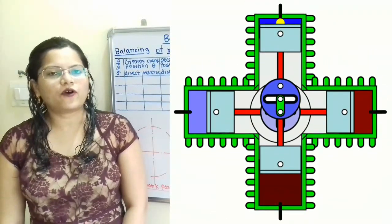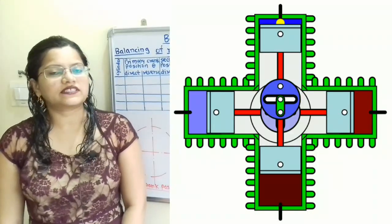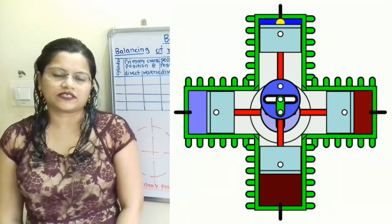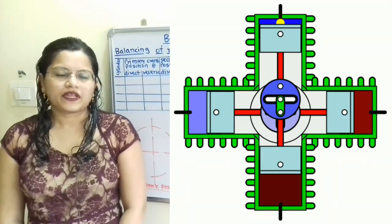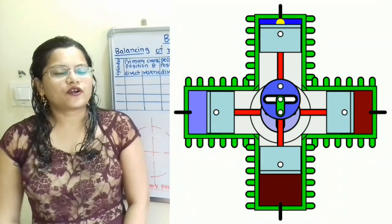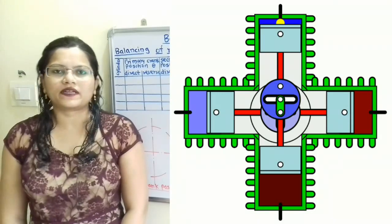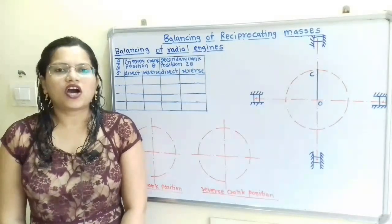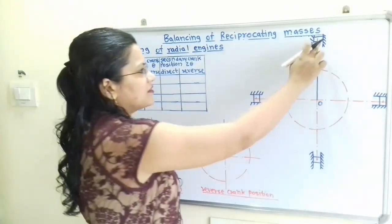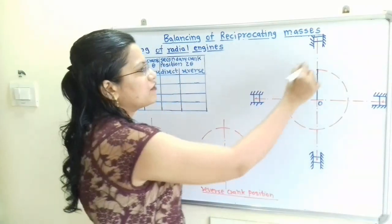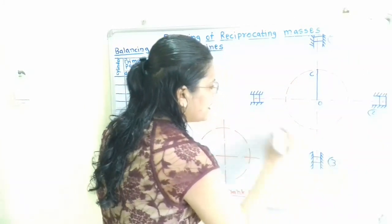For 4-cylinder radial engines we have to find out primary unbalanced forces as well as secondary unbalanced forces by using the method of Direct Crank and Reverse Crank. In radial engines, all cylinders are connected to a common crank. We will place all 4 cylinders at equal distance apart, at an interval of 90 degrees. Cylinders are numbered 1, 2, 3, and 4.